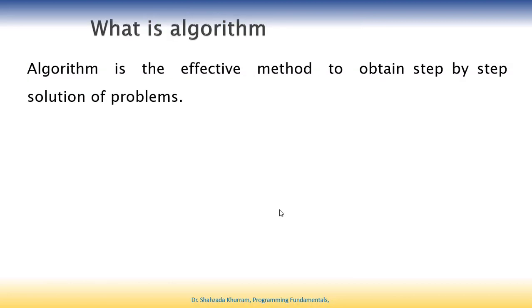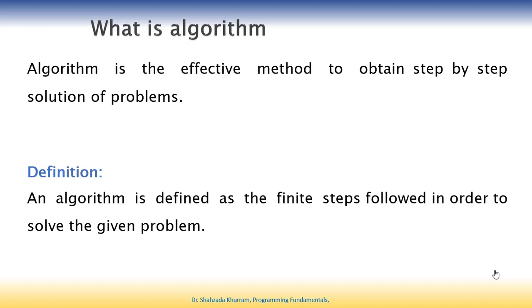Next, what is an algorithm? The algorithm means that for any problem, we take step by step solutions. This is a process. For example, two plus two is also a process - we call it addition. If we want to calculate percentage, we write the formula in a program. That is basically an algorithm. The definition: an algorithm is the finite steps followed in order to solve a given problem.